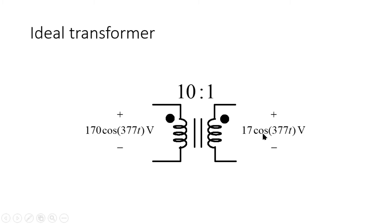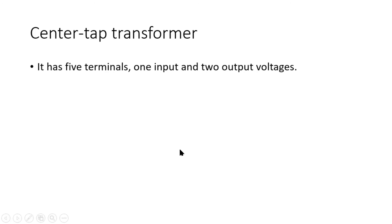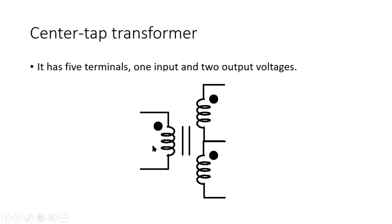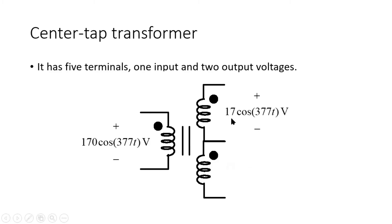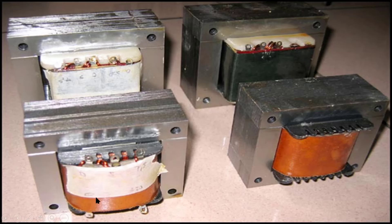Another very frequently found transformer in rectifying circuits is the center-tap transformer. It has the same input port but instead of one, it has two output ports that very often have exactly the same voltage. For a 10-to-1 ratio with an input of 170·cos(377t) volts, we get not one but two output voltages with an amplitude of 17 volts each. That is how those small transformers used in rectifying circuits look, and you will find them in the laboratory.